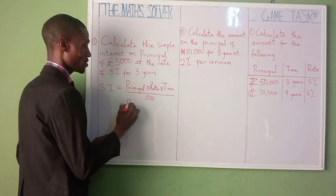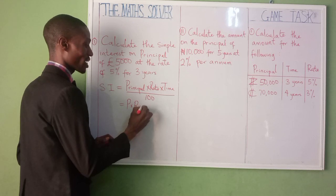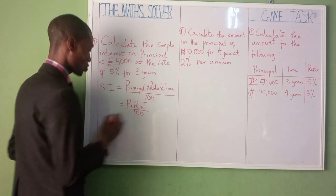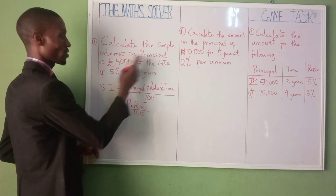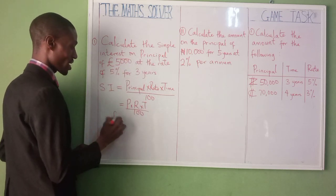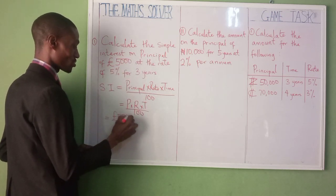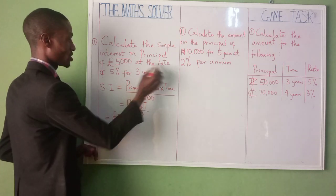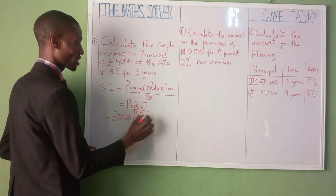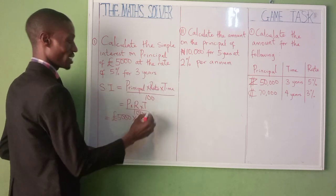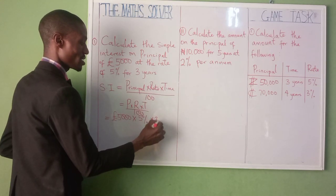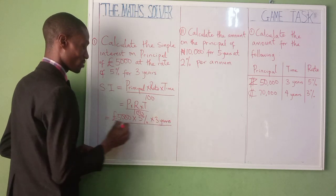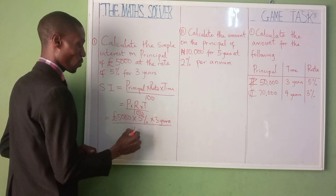That is, P times R times T over 100. So, what's our principal here? It said £5,000; times the rate, which is 5%, as you can see here; and the time is 3 years. Now don't forget, divided by 100.